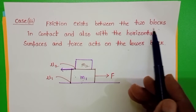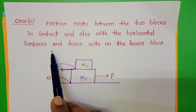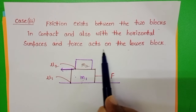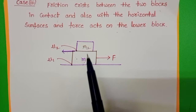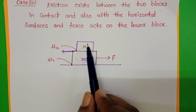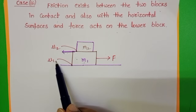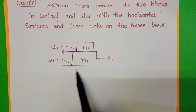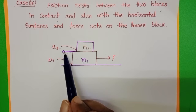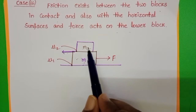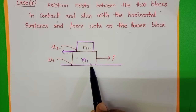Friction exists between the two blocks in contact and also with the horizontal surfaces, and force acts on the lower block. m1 is the mass of the lower block and m2 is the mass of the upper block. mu1 is the coefficient of friction between the lower block and horizontal surface. mu2 is the coefficient of friction between m1 and m2. Fe is the external force applied on the lower block.